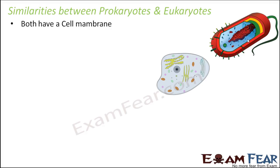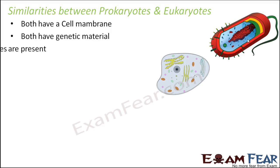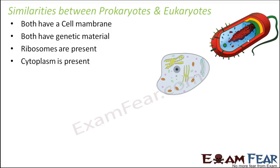Both have a cell membrane, and their function and structure are the same. Both have genetic material — just that in eukaryotes it is enclosed inside the nucleus, whereas in prokaryotes it is scattered. Ribosomes are present in both, and in both cases ribosomes help in protein synthesis. Cytoplasm is also present in both of them.